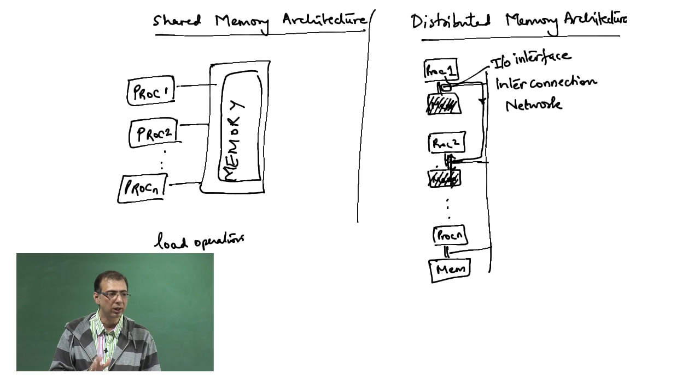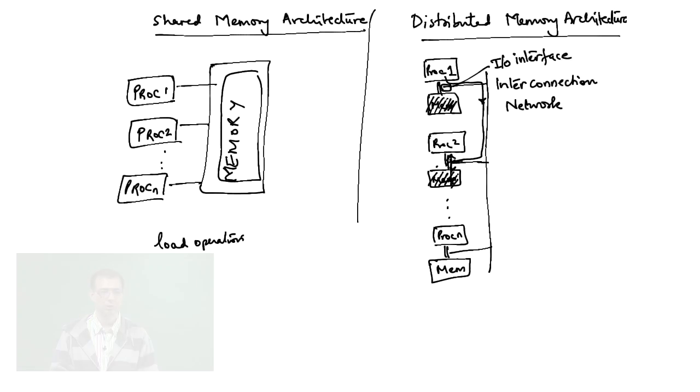Fetching data from remote memory is not an instruction, it is a proper procedure that has to be executed where you write a request onto the I/O device and it has to be sent to the other processor. It has to be received by the other processor and it has to then deliver the data, pick up the data from its local memory, put it back onto the network, and then this processor has to pick it back from the network.